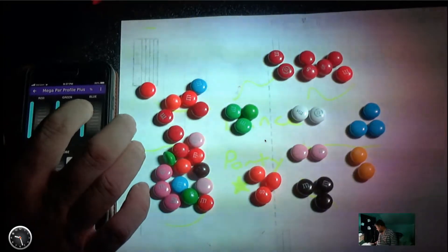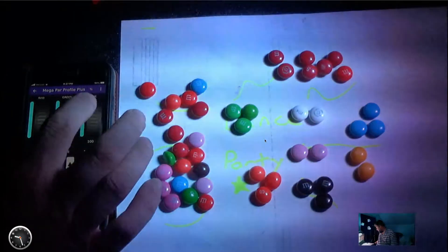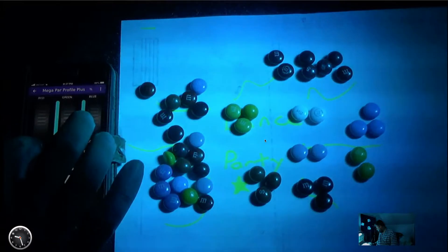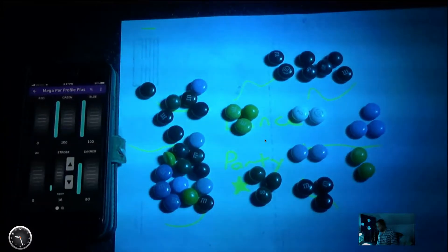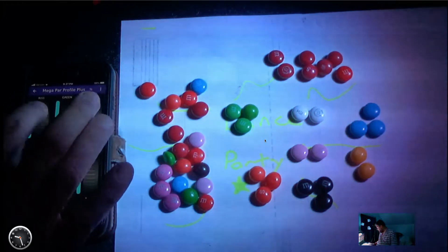So to do additive color mixing, if I wanted to make a cyan, I would just turn the green and blue on. And then I'm going to actually make a cyan color. That's additive color mixing.